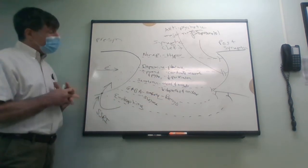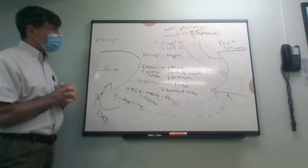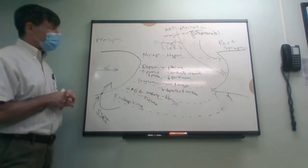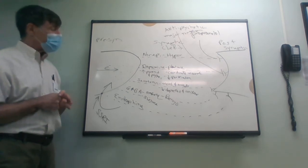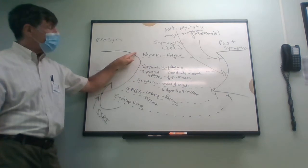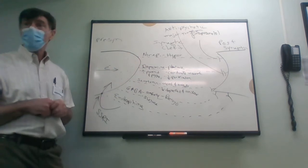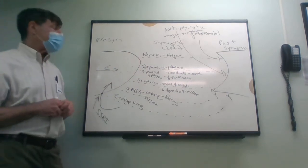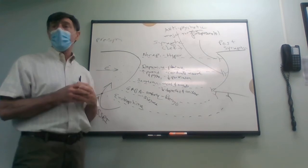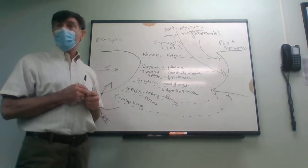Let's talk about depression. Depression could be not enough serotonin, maybe not enough norepinephrine or dopamine. So the next question is: how do we elevate those neurotransmitters?